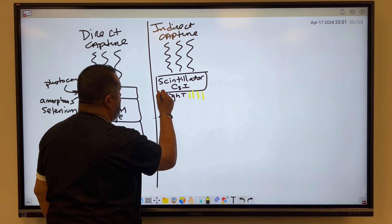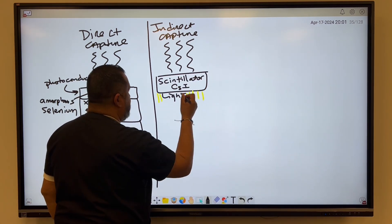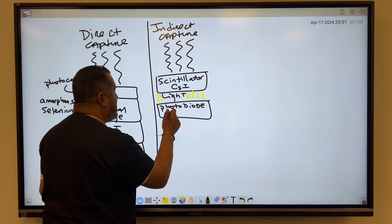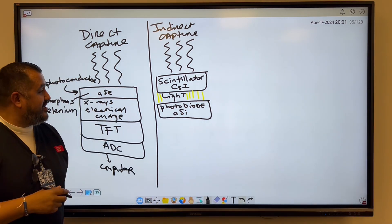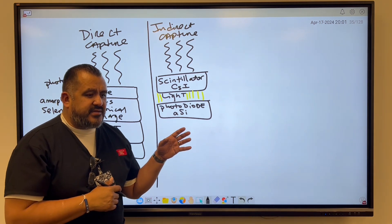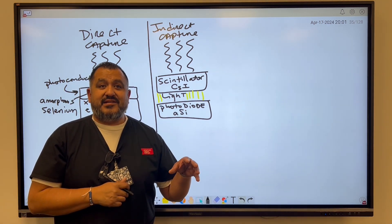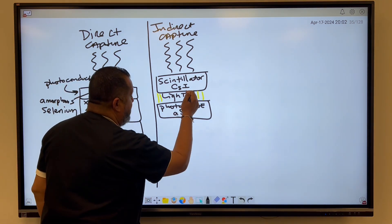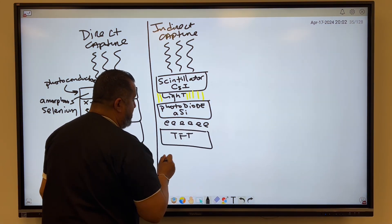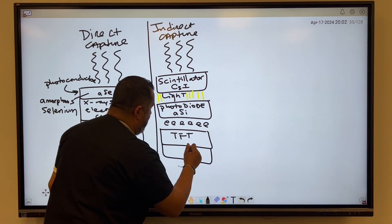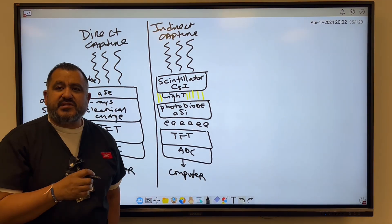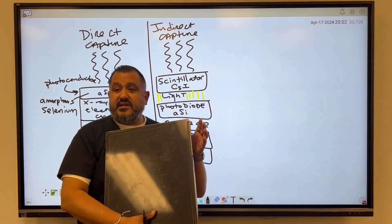So you're going to have light being produced. Now it's going to hit another device called a photodiode. The photodiode is made up of amorphous silicon. Photodiode materials convert light into electronic signal. So now you have this light producing electrons, and the electrons are then going to hit the TFT — the thin film transistor — and then it goes to an analog digital converter, and then to the computer for processing. So the TFTs are the image receptors.